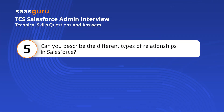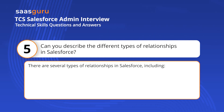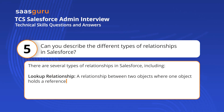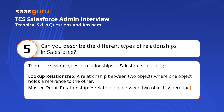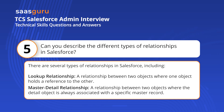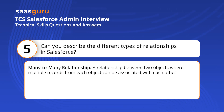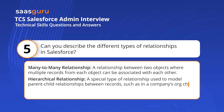Can you describe the different types of relationships in Salesforce? There are several types: a lookup relationship, which is a relationship between two objects where one holds a reference to the other; a master-detail relationship, where the detail object is always associated with a specific master record; a many-to-many relationship, where multiple records from each object can be associated with each other; and a hierarchical relationship, a special type used to model parent-child relationships such as in a company's org chart.